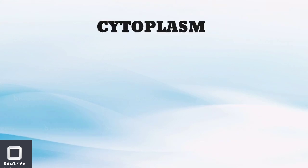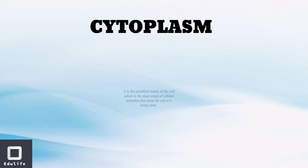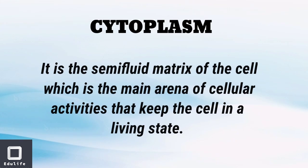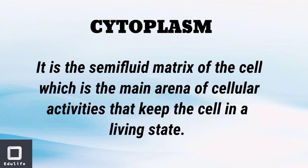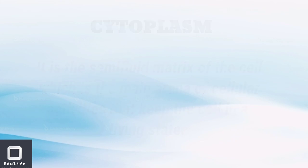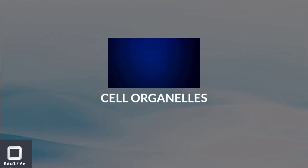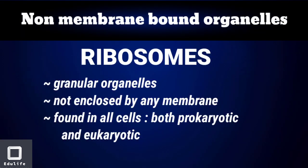Cytoplasm is a semi-fluid matrix of cells. Cytoplasm contains cell organelles. Membrane-bound ribosomes are found in prokaryotic cells.